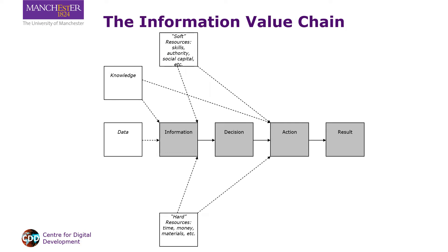Fourth, hard resources are needed. Those involved must have the time and the money to undertake the information value chain processes, and they must access, adopt, and apply materials — particularly ICTs, but also other materials that might be needed to take action. For instance, to turn information into results via action, a farmer might need land, seed, fertilizer, transport, and so on.